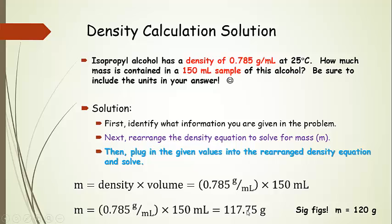So rounding, we want to go 117. So we're just going to round up to 2 sig figs, giving us 120 grams.